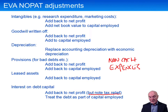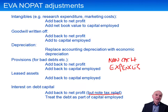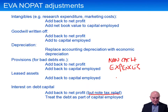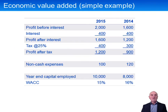What we want to find is a positive economic value added. Think of residual income: we have the NOPAT, and then we take off a charge for the use of capital. We want to end up in pocket — we want to end up with a positive number. We'll see first a simple example that's not in your notes, and then go slowly through the example which is in your notes.